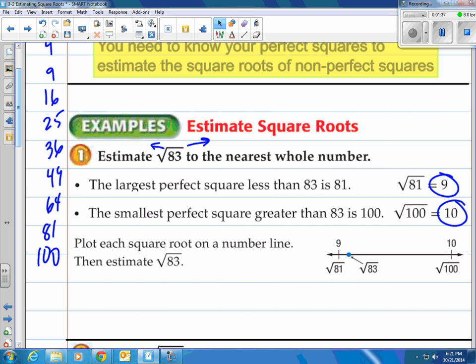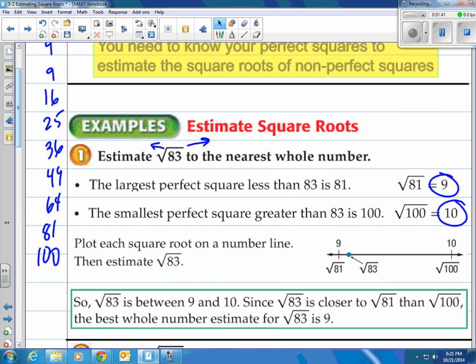But notice 83 is a lot closer to 81. So we are going to say that because the square root of 83 is between 9 and 10, and 83 is closer to 81 than 100, the best whole number estimate for the square root of 83 is going to be 9. So we'll say 9 is the closest.